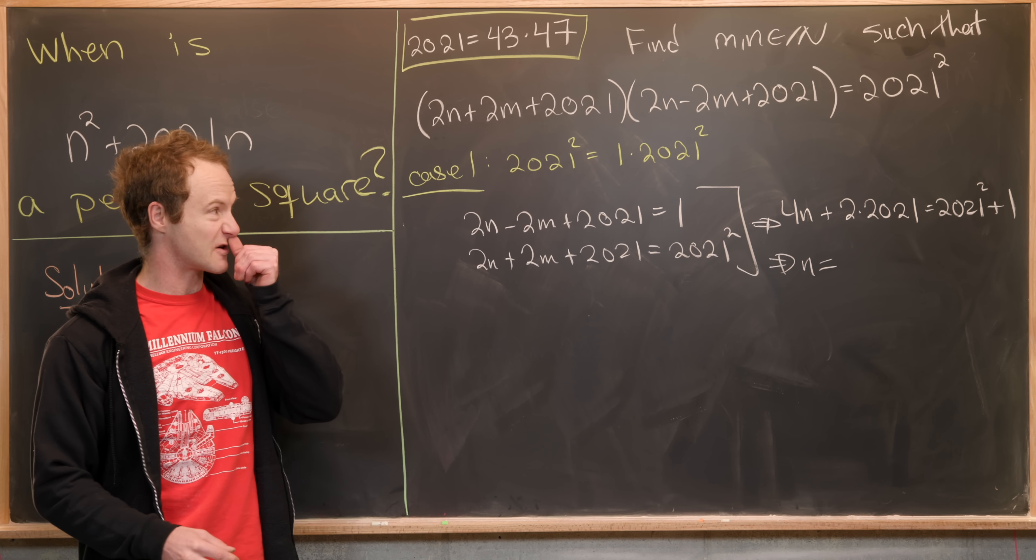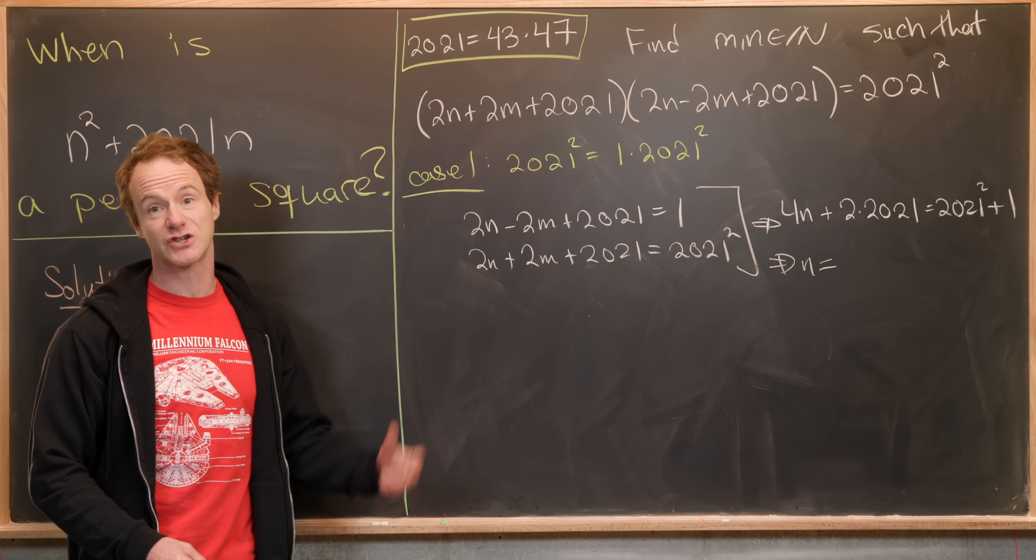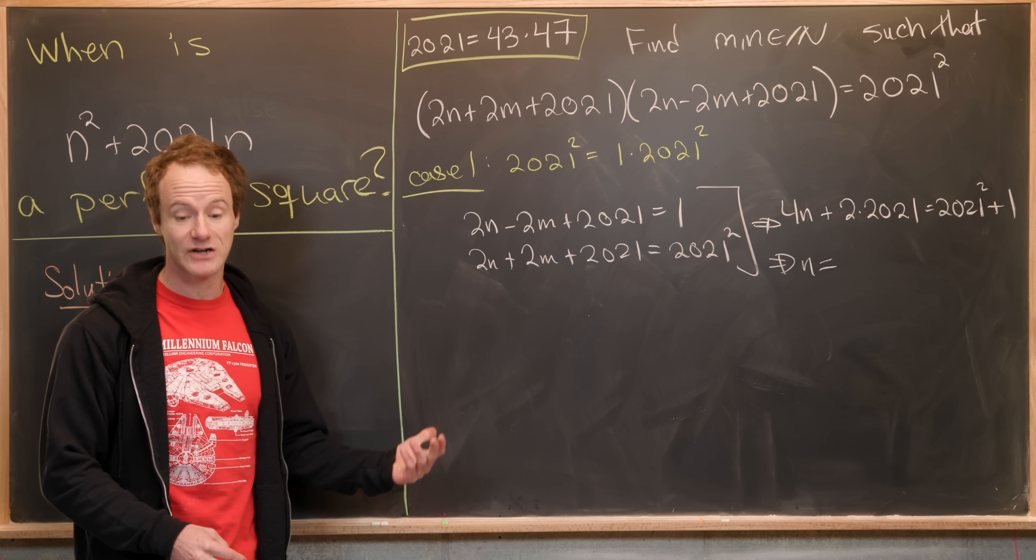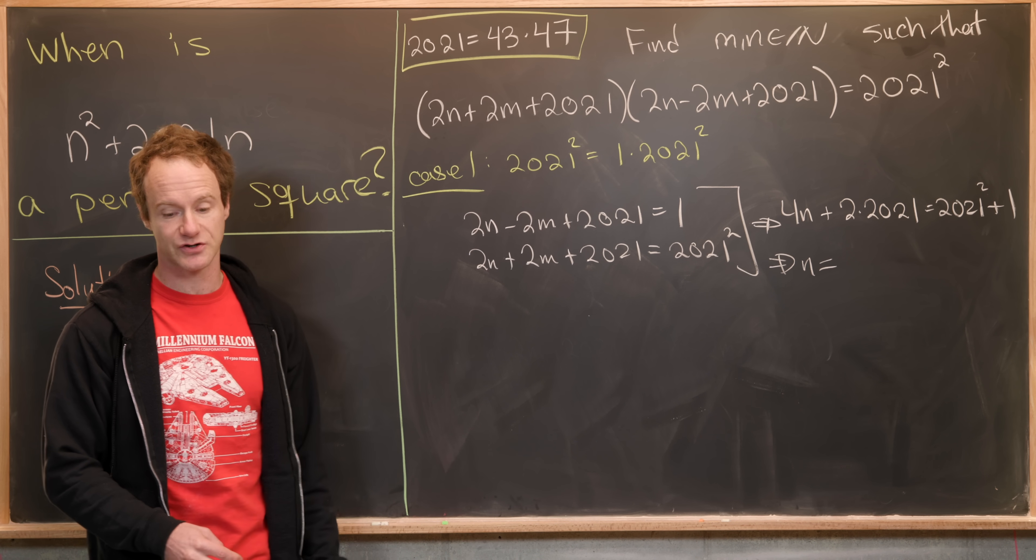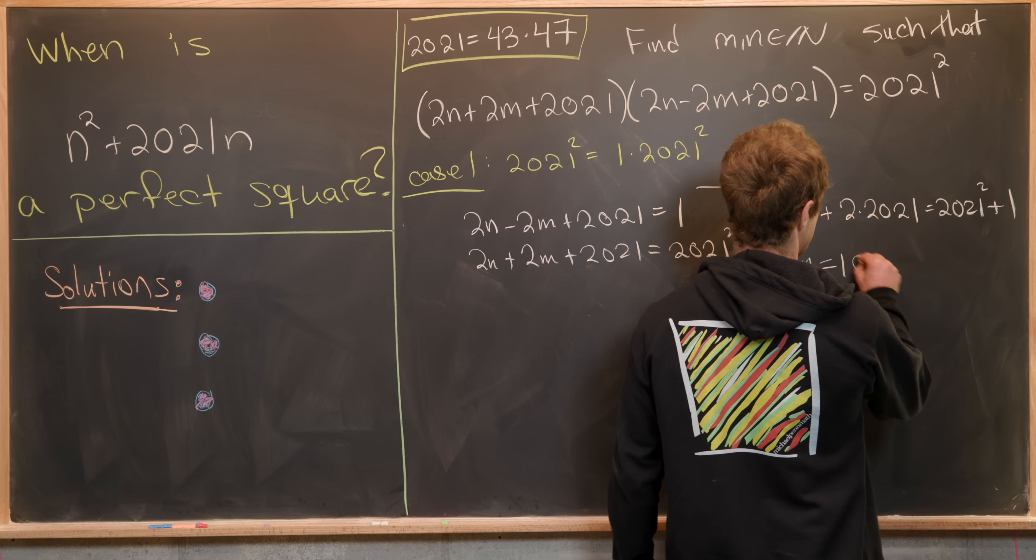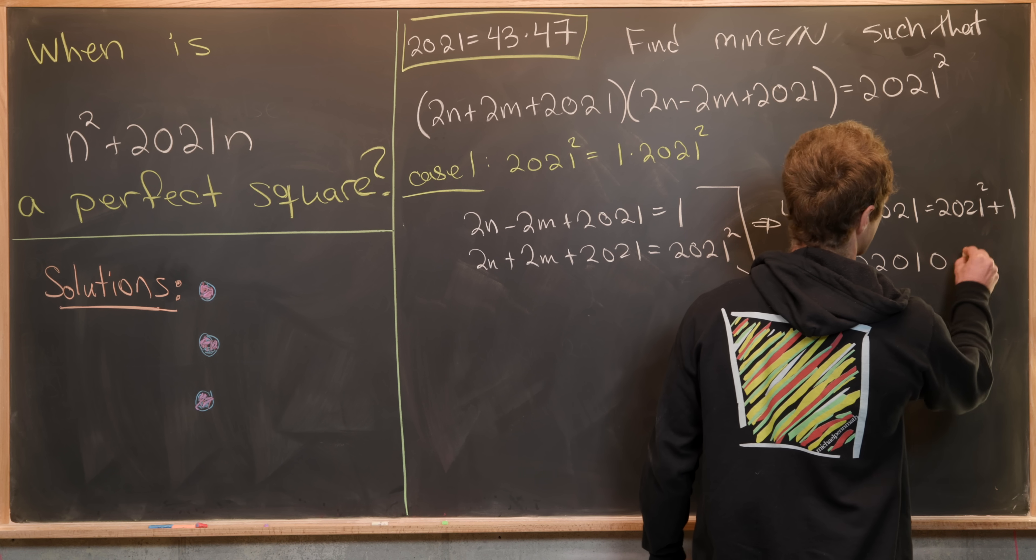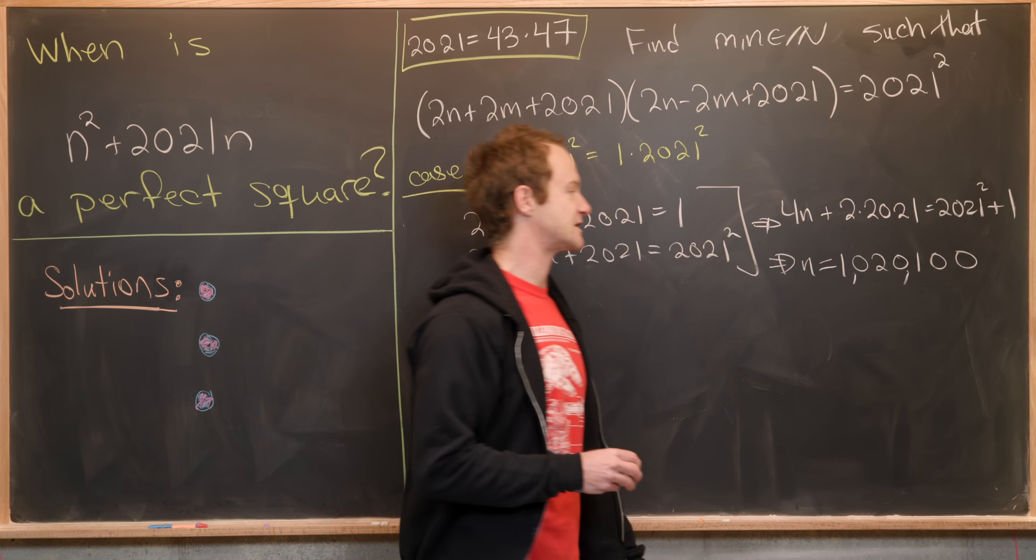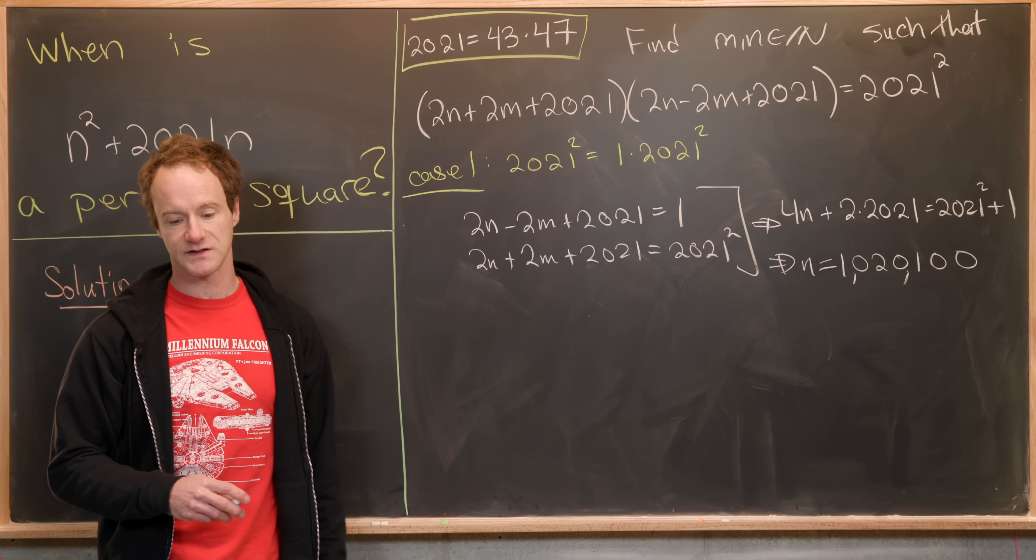But then it's not so hard to check what we get for n in this case. So it might look a little bit scary, like maybe n will be some rational number and not a natural number. But in fact, you do get a natural number here. And the natural number you get is 1,020,100.